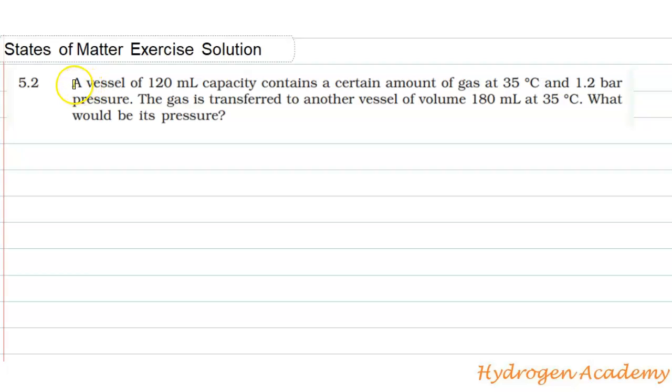Hello dear students. Here our question is: a vessel of 120 mL capacity contains a certain amount of gas at 35 degrees Celsius and 1.2 bar pressure. The gas is transferred to another vessel of volume 180 mL at 35 degrees Celsius. What would be its pressure?